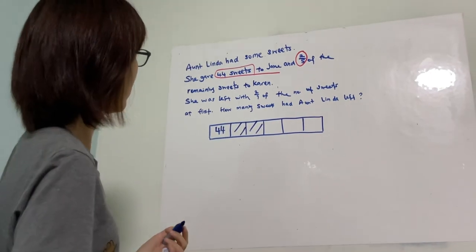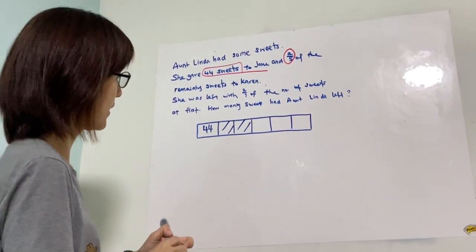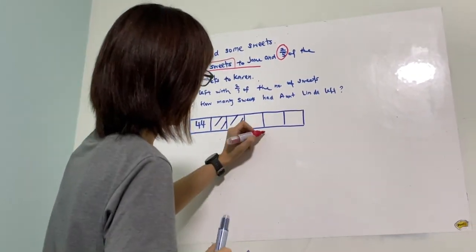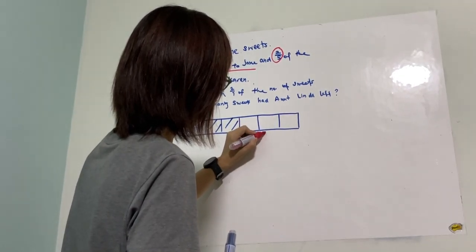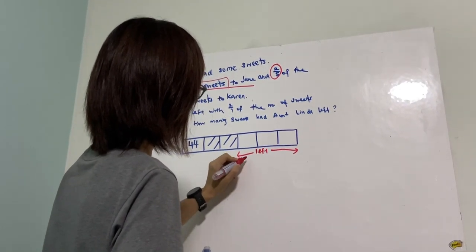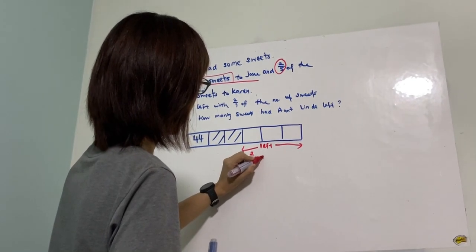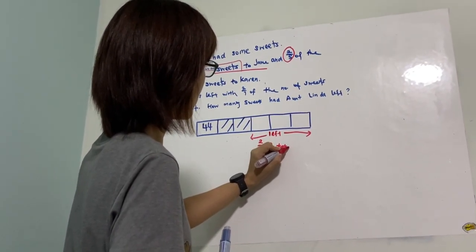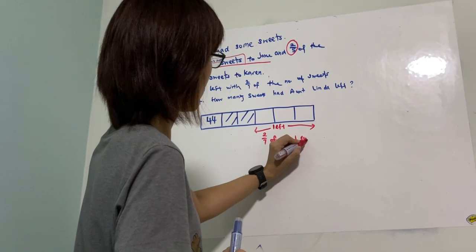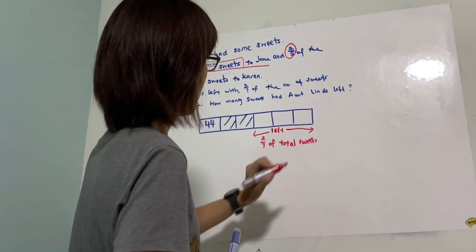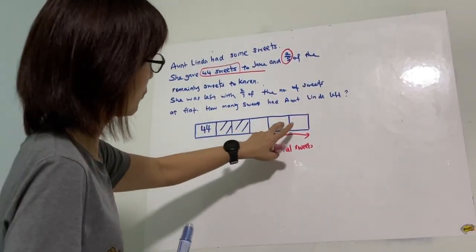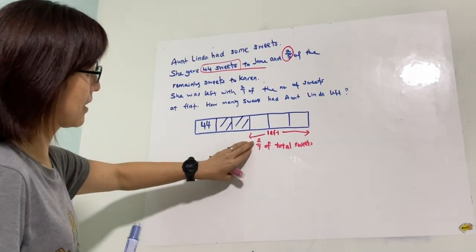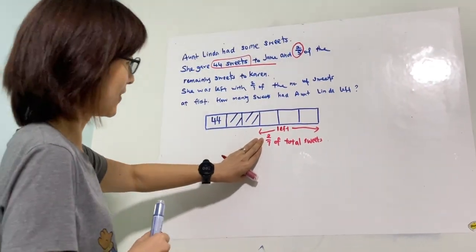She was left with two out of seven of the number of sweets at first. So what we can do is, since this is what is left, this is actually two out of seven of the total number of sweets. We could say that three units makes up two out of seven of the total units.